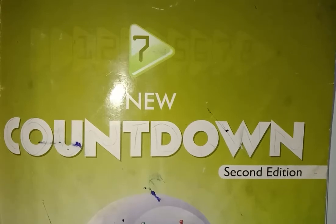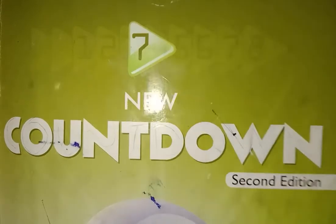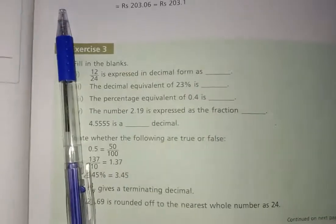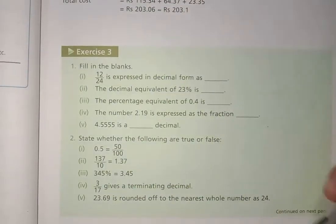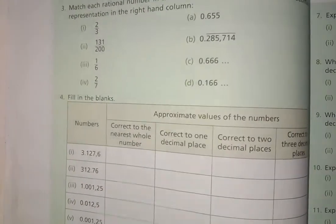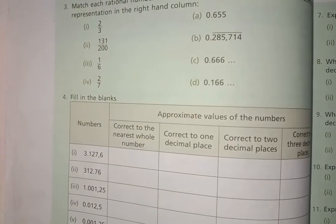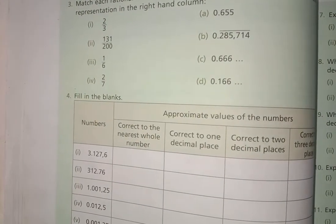Today our book is 7 New Countdown Second Edition. We can see what is our today's lecture or today's topic. Today's exercise is 3 and we have to start it. Exercise number 3, question number 3.